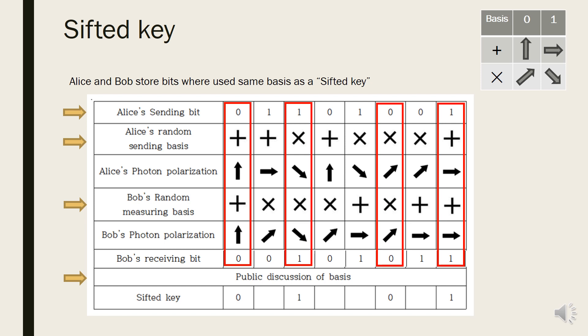So Alice and Bob discard bits that used different bases and only get bits with the same bases, that is 1st, 3rd, 6th, and 8th one. Therefore, 0, 1, 0, 1 remains as sifted key. After reconciliation and privacy amplification procedure for correcting environmental or mechanical error and rectifying opened information, this sifted key finally becomes the secret key.